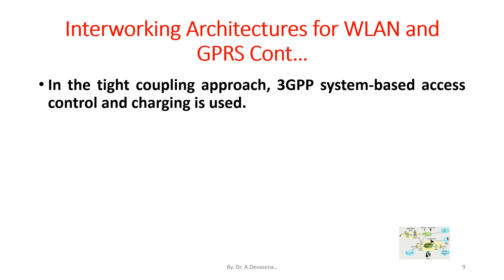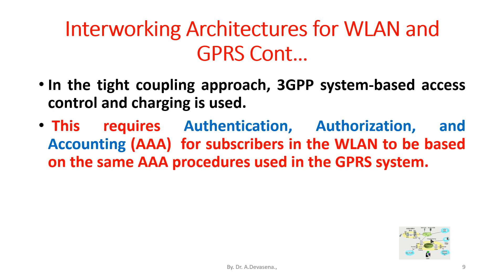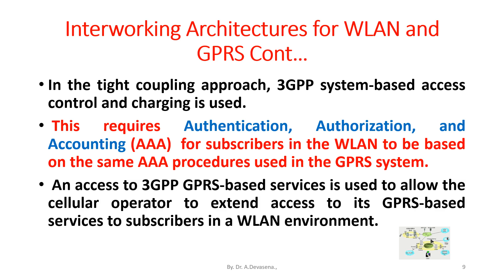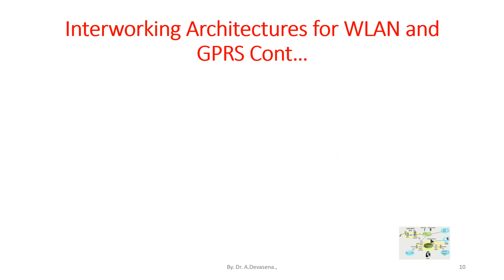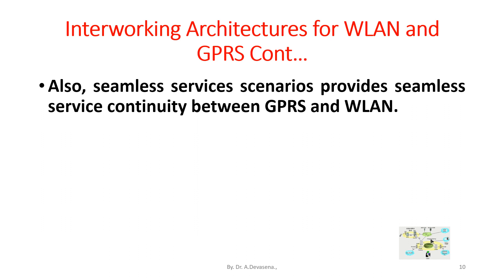In the tight coupling approach, the 3GPP system-based access control and charging is used. This requires Authentication, Authorization, and Accounting — that is AAA — for the subscribers in the WLAN to be based on the same AAA procedures used in the GPRS system. Access to 3GPP GPRS-based services is used to allow the cellular operator to extend access to its GPRS-based services to subscribers in a WLAN environment.